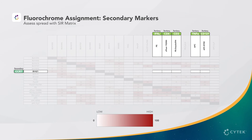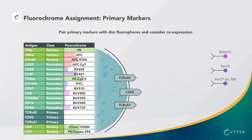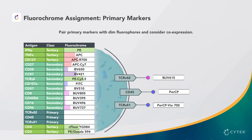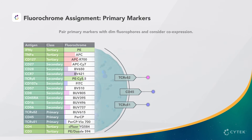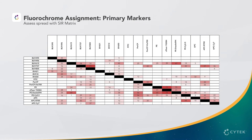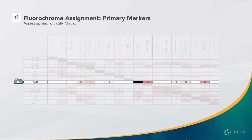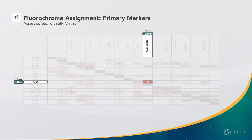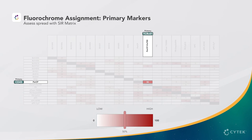Now we can assign the primary antigens. Recall that fluorochrome brightness is one of the factors that impacts spread, so we can choose dim fluorochromes for these antigens to minimize this effect. As with the secondary antigens, we will consult the SIR matrix to verify our choices. Looking at CD45 on PerCP, we see it has the potential to spread into TCR Vdelta-1 on PerCP-Vio700. However, as a primary marker, TCR Vdelta-1 is well separated from the negative population, and the SIR value of 50 is not too high. We will keep the selection because there is a high probability that TCR Vdelta-1 can still be resolved.